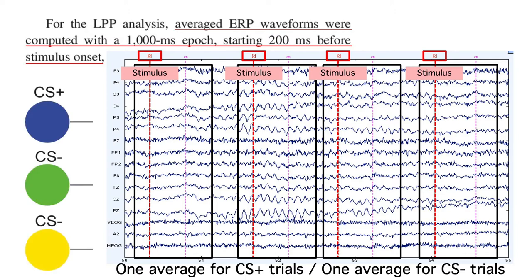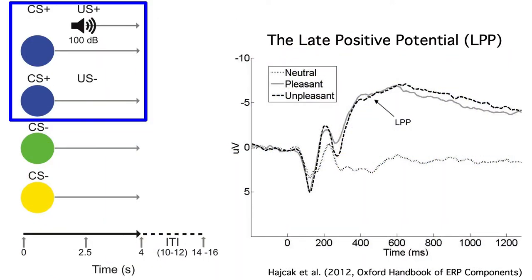He then combined all the CS plus epochs together into one average, and all the CS minus epochs into another average. The two different CS minus stimuli were just averaged together. The hypothesis was that the late positive potential would be larger for the CS plus than for the CS minus.